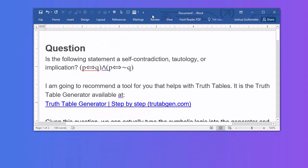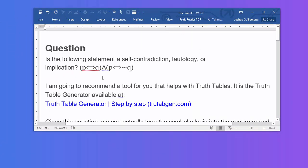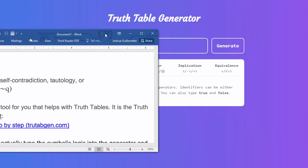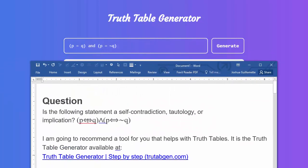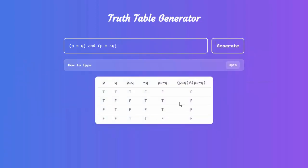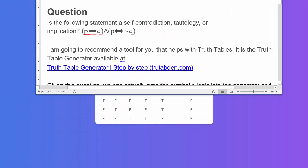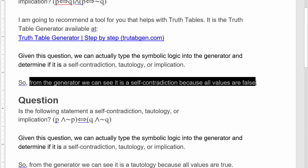So for 'p if and only if q' AND 'p if and only if not q': p if and only if is going to be equal to q, and then p if and only if — using an equal sign — not q. I'm going to close up the parentheses there. So you're going to see p↔q ∧ p↔¬q. You do want to double check those. Generate — they're all false.